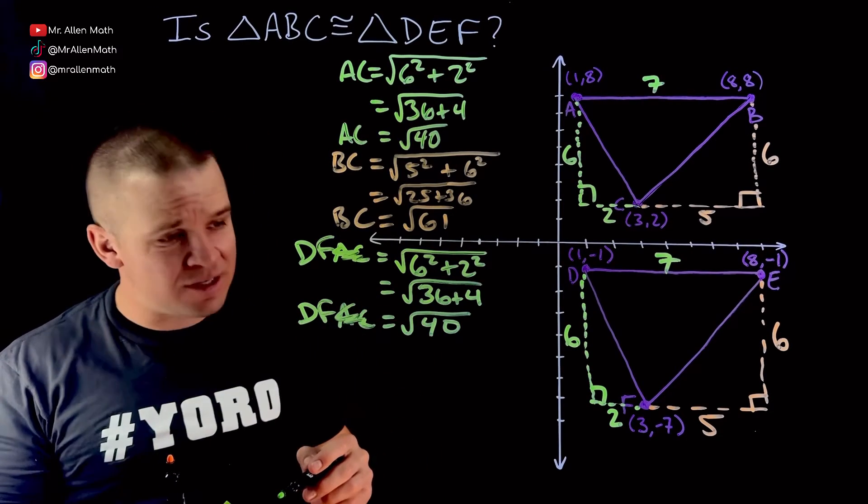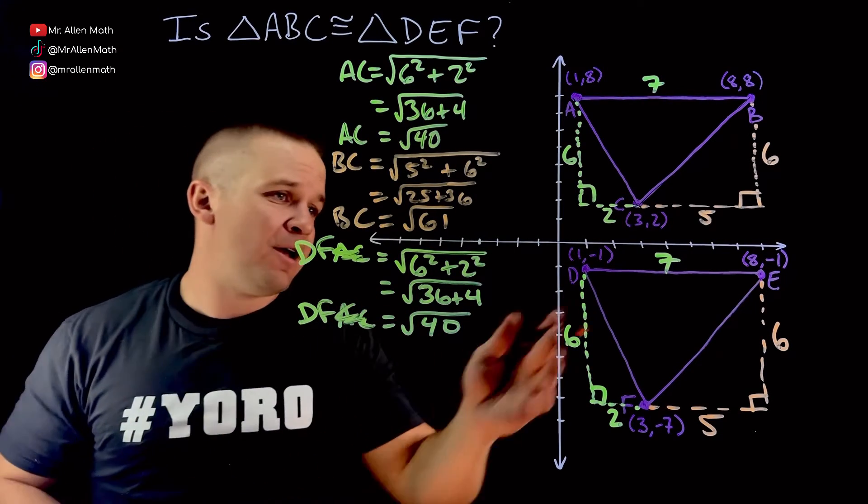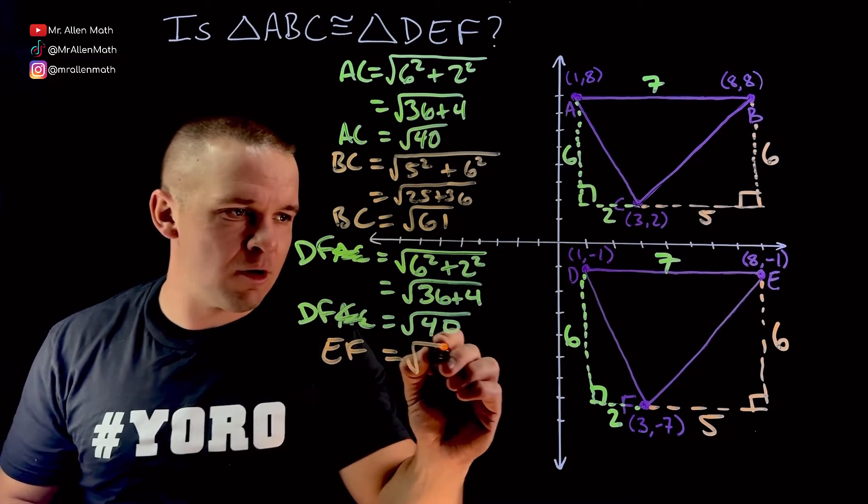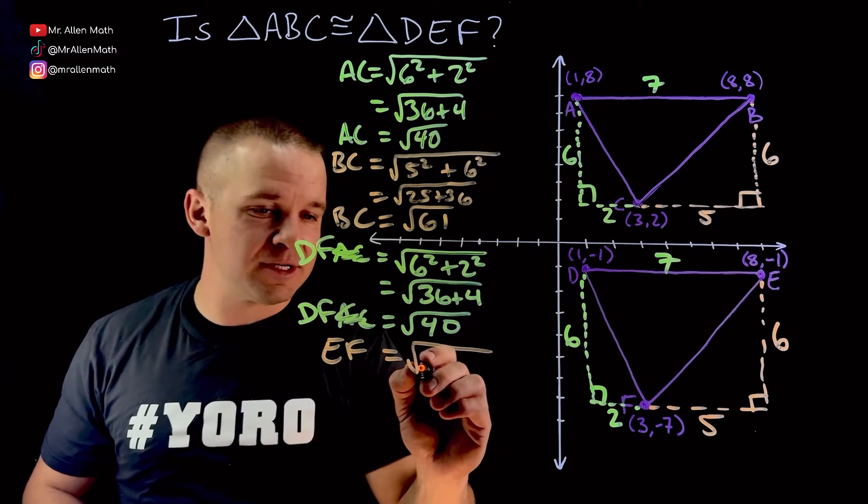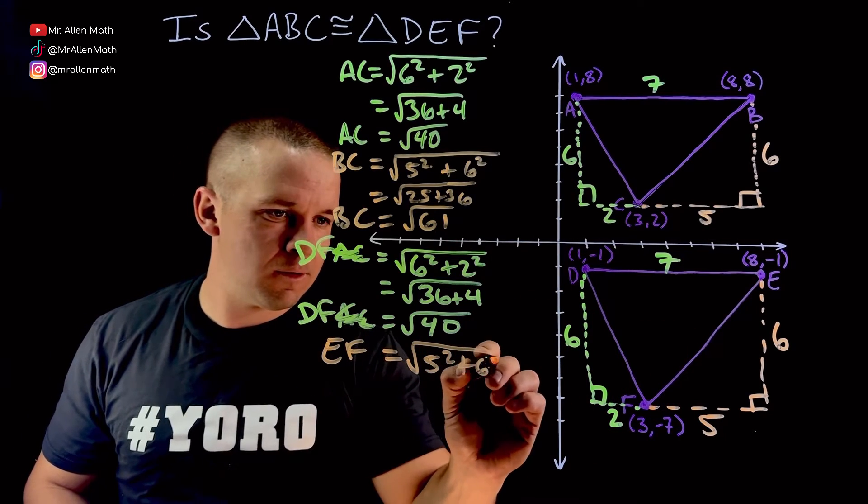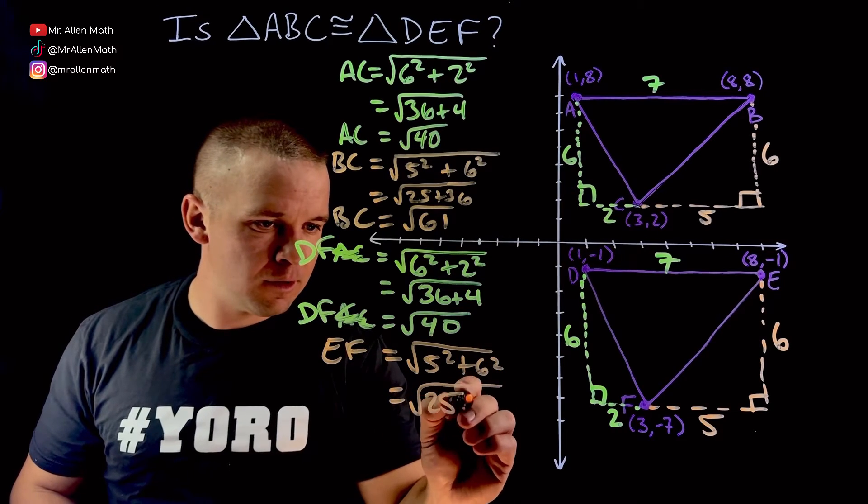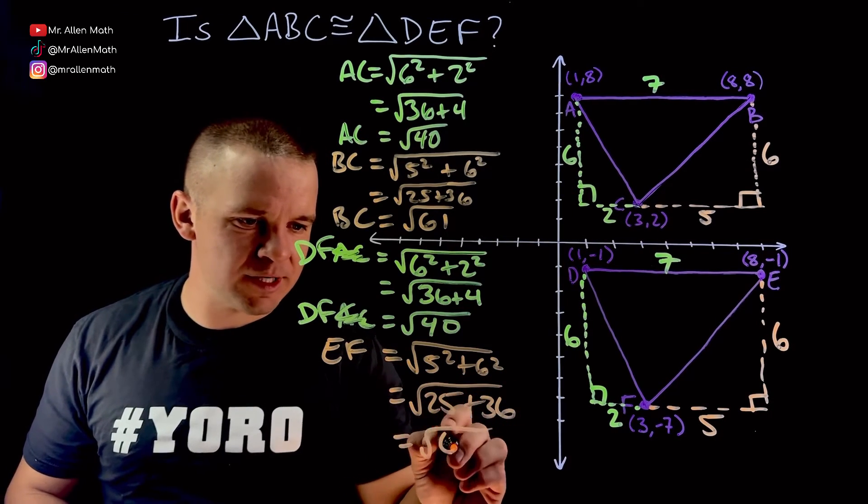All right, here we've got EF. So EF is equal to the square root of 5 squared plus 6 squared. So that's going to be 25 and 36, which is the square root of 61.